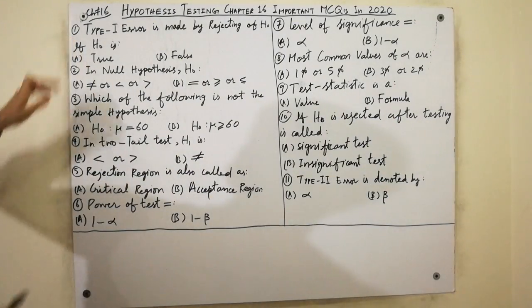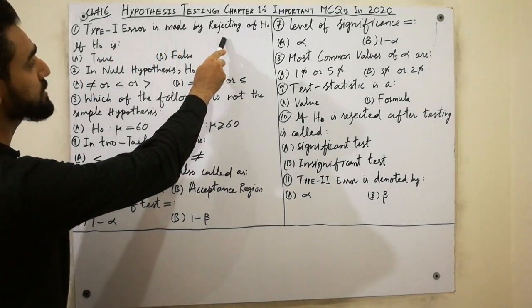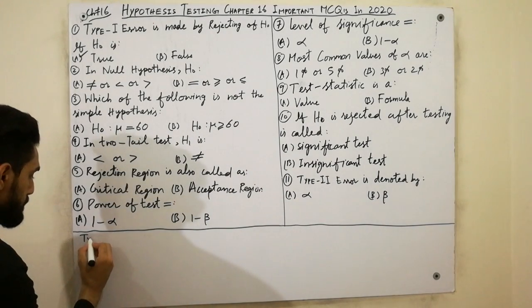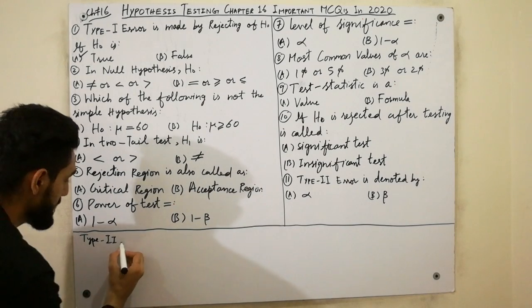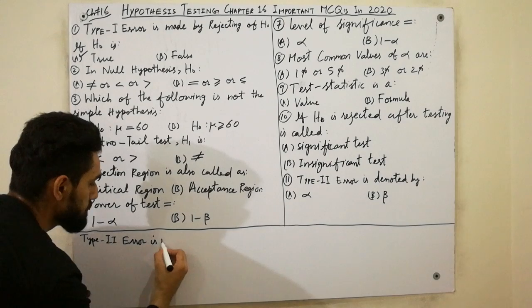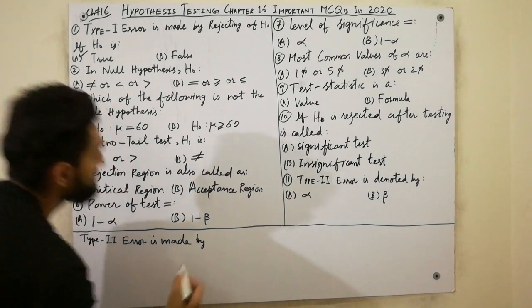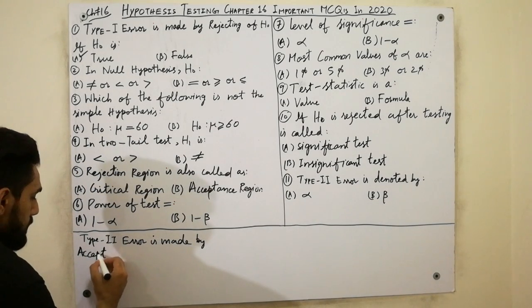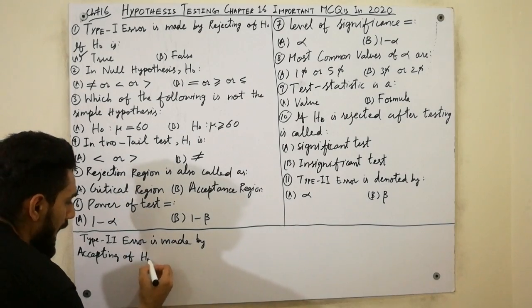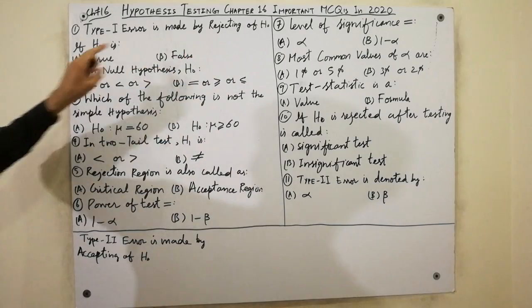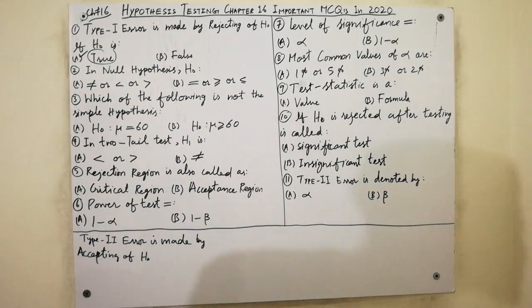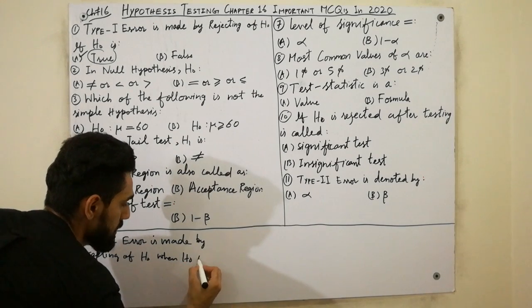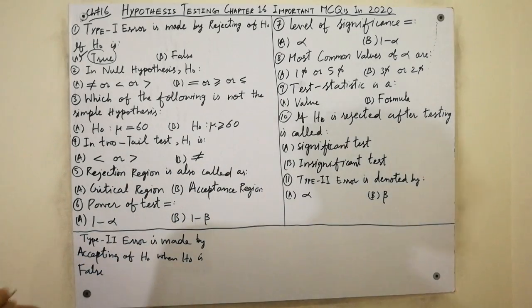The first MCQ is: Type I error is made by rejecting H-naught when H-naught is true. We know that Type I error is about rejection. Type II error is made by accepting H-naught when H-naught is false. So must remember that as a very key point.